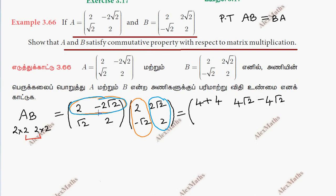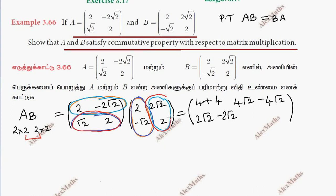Now taking the second row with first column: 2 root 2, minus 2 root 2, then plus root 2, plus root 2 — giving 4. Plus 4 more. The root elements cancel out, giving minus zero. So AB is equal to the matrix 8, 0, 0, 8. AB equals 8, 0, 0, 8.